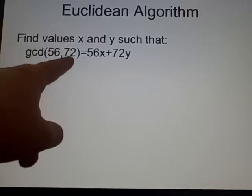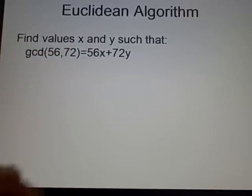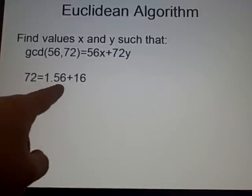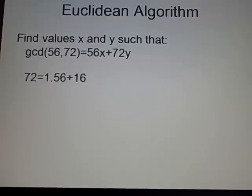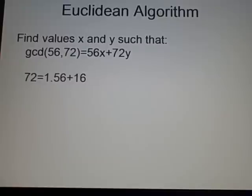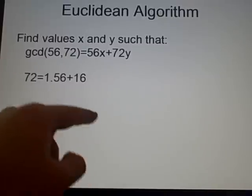You express the largest in terms of the smallest and add whatever remainder you've got left. So, first off, we have 72, it's 1 times 56 plus 16. Now, what you do is you express this value in terms of this remainder. And you carry on all the way down until there is no remainder.